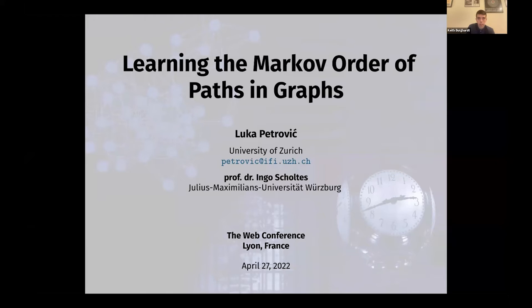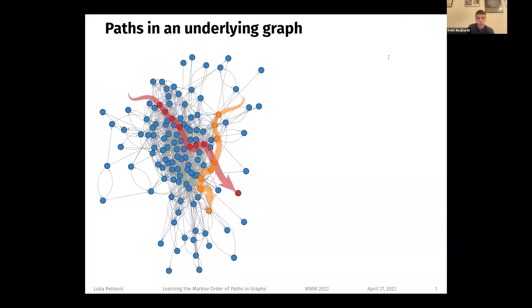The talk is about detecting the Markov order of paths in a graph. First, let's get some intuition about paths in a graph. In abstract, we first have a graph that represents the topology of the underlying system, and paths, which are represented here in red and orange, are sequences of nodes that are generated by some process that is running along the edges of the graph.